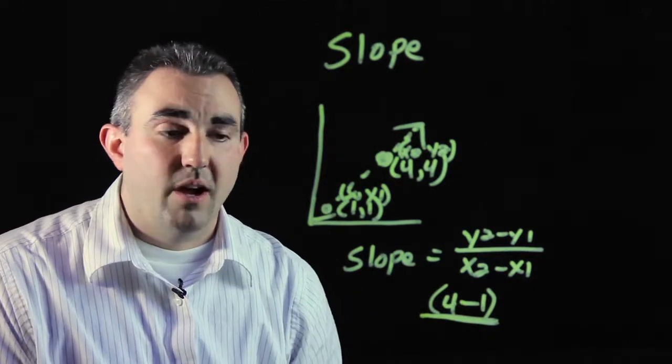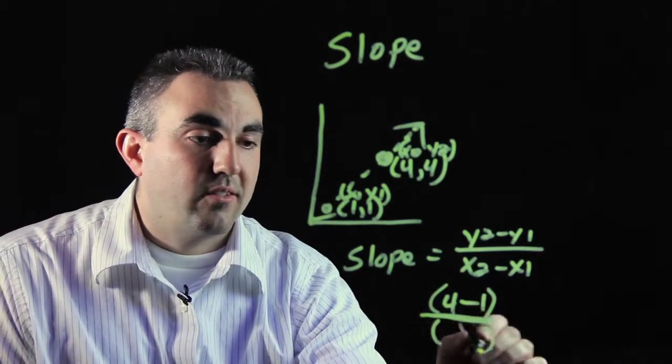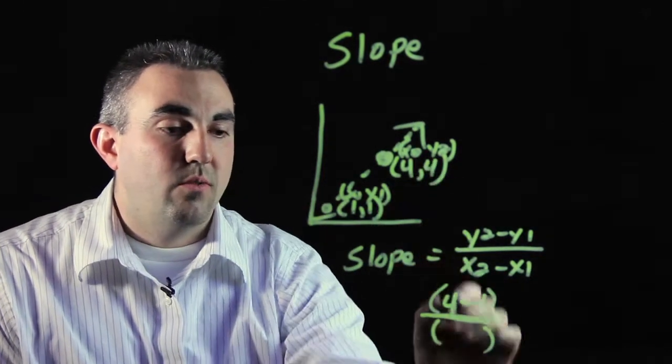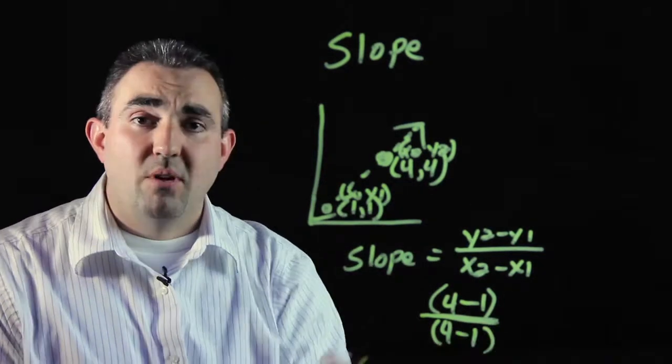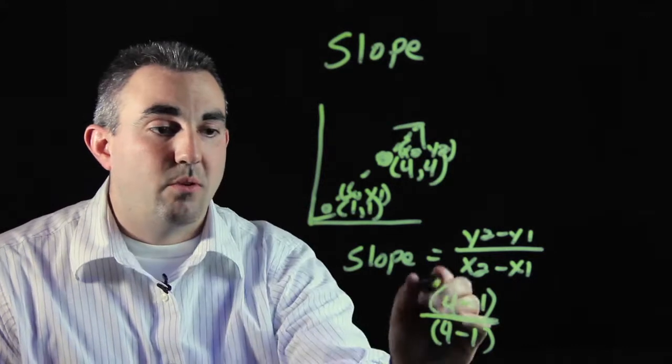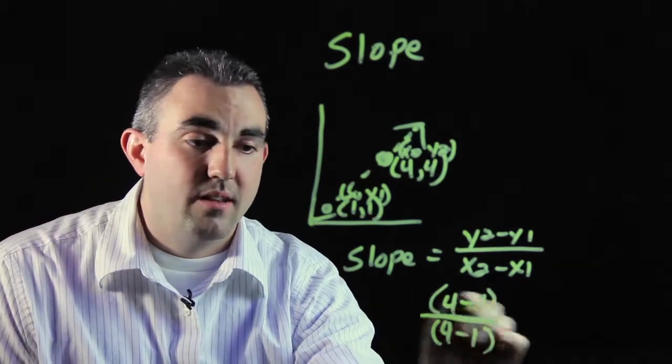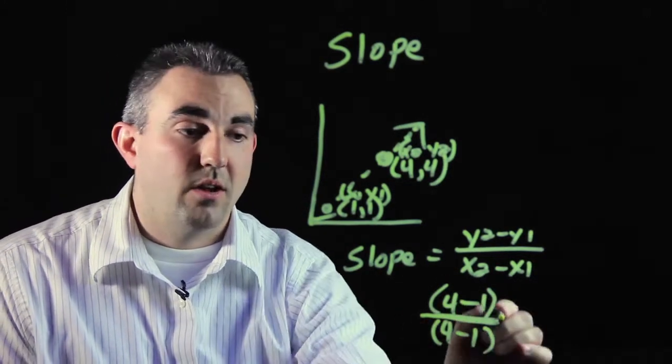Then you're going to press your division button and you're going to put your x coordinates in. x2 is 4 minus x1, which is 1. Put that in parentheses as well. So parentheses 4 minus 1 divided by parentheses 4 minus 1.